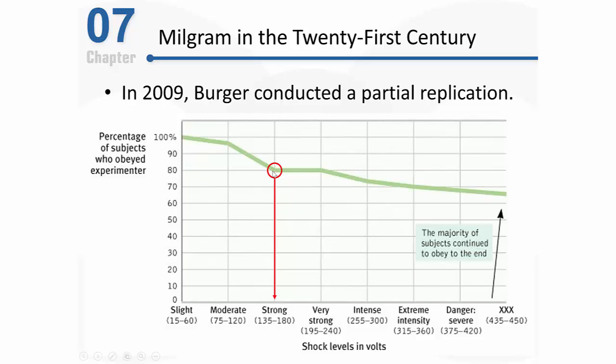In Milgram's original data, a willingness to continue past 150 volts strongly predicted full obedience. Most participants who dropped out did so around 150 volts when the subject started screaming — those who went on past that point nearly all went all the way to 450. Berger also carefully screened participants to weed out those who might get too stressed, and repeatedly reminded all subjects that they could withdraw at any time without penalty. The IRB viewed Berger's procedure as relatively safe and granted approval.